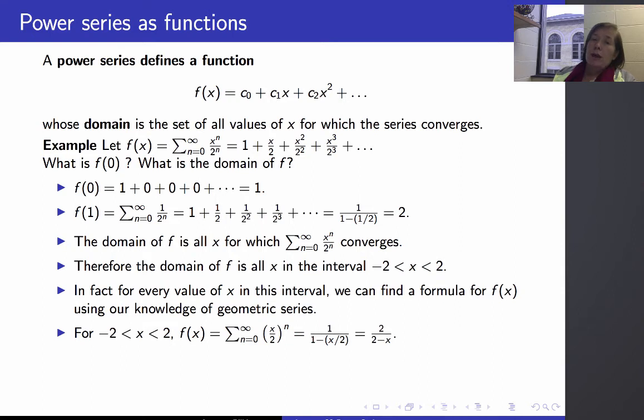Now, the function 2 over 2 minus x has a bigger domain than the interval from minus 2 to 2. So these two functions are not equal. They only coincide on the interval from minus 2 to 2. And in fact, in this case, you can look at f(x) as the function 2 over 2 minus x with a restricted domain. So it's a piecewise defined function with f(x) equals 2 over 2 minus x, and it doesn't exist outside that interval.